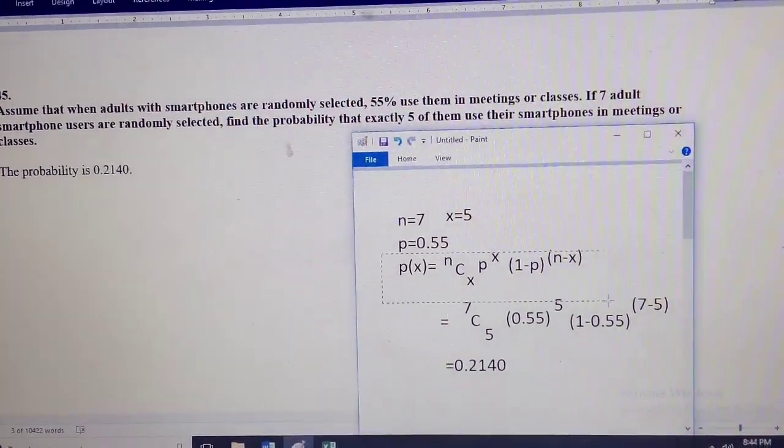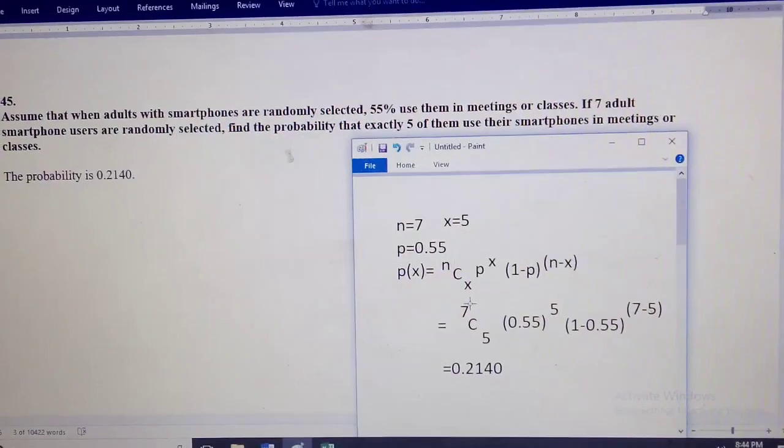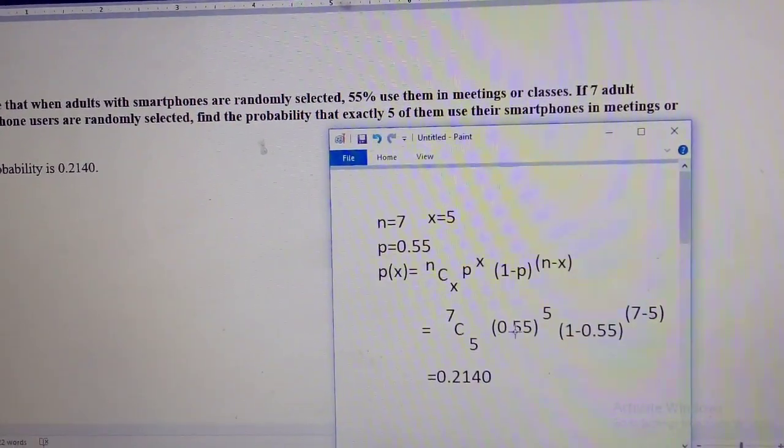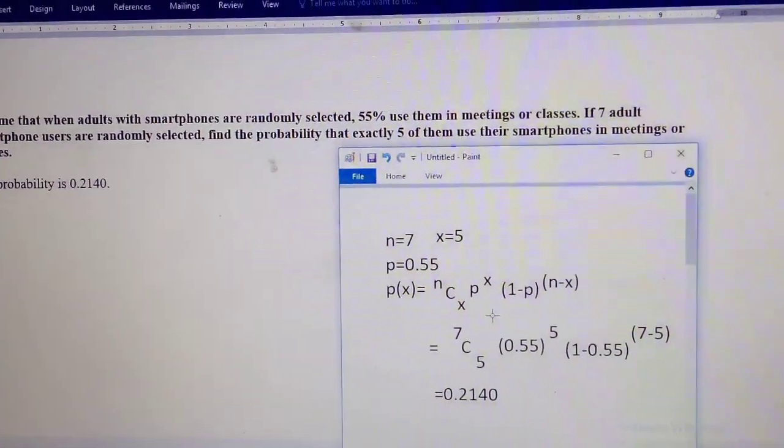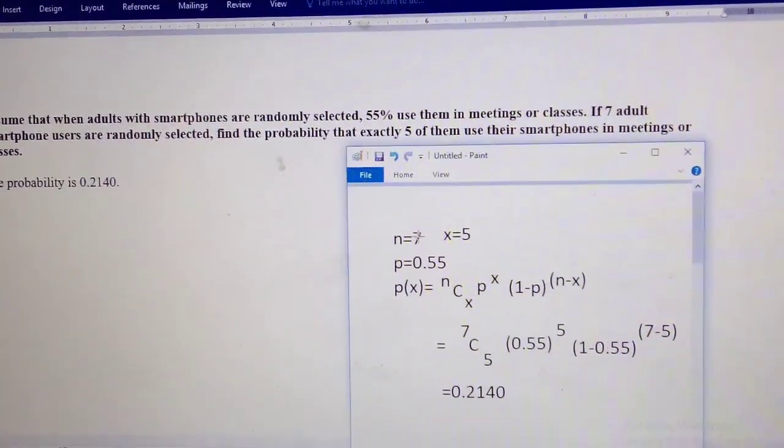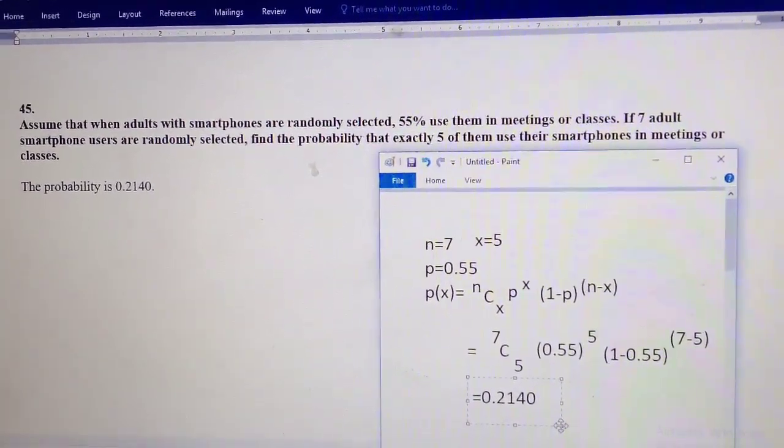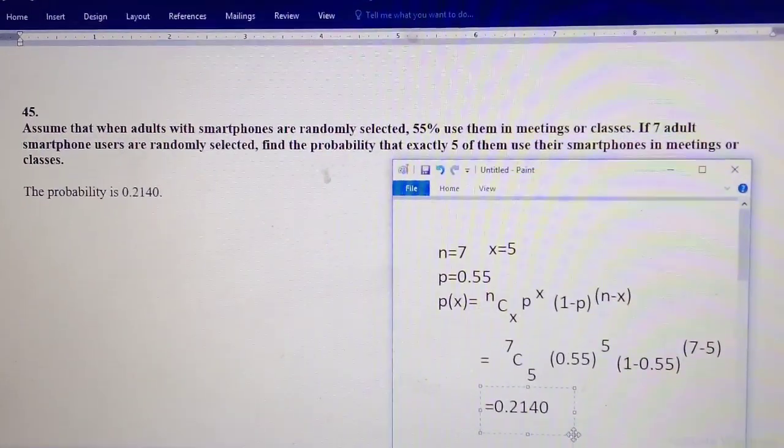From the binomial probability distribution, by putting in the values—7C5, 0.55—and calculating, I get the result that is 0.2140. This is our desired result.